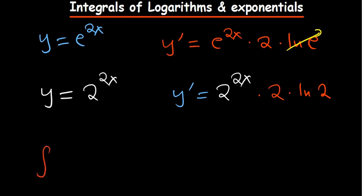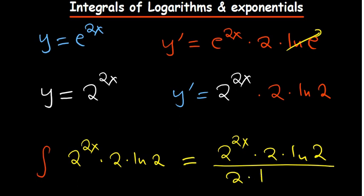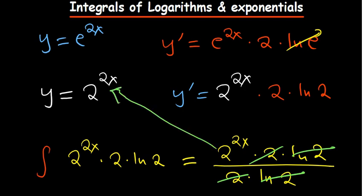To reverse that for integration: our derivative was 2^(2x) multiplied by 2 multiplied by natural log of 2. So for integration we do the opposite — we divide the entire thing by the derivative of the power and divide by the natural log of the base as well. That takes you back to 2^(2x) plus c.